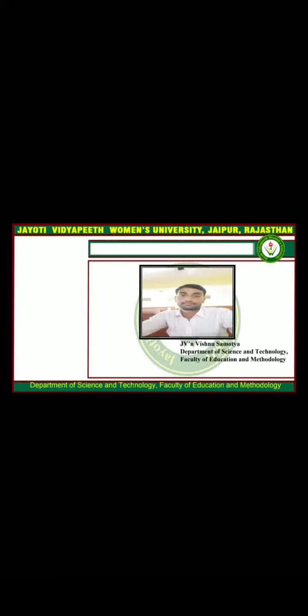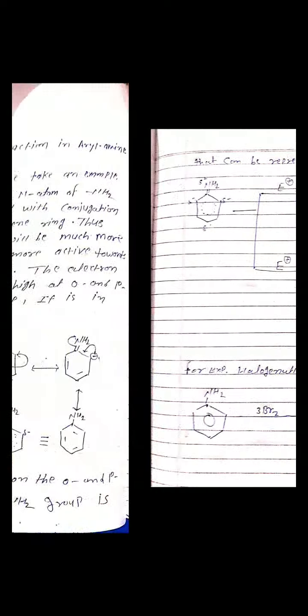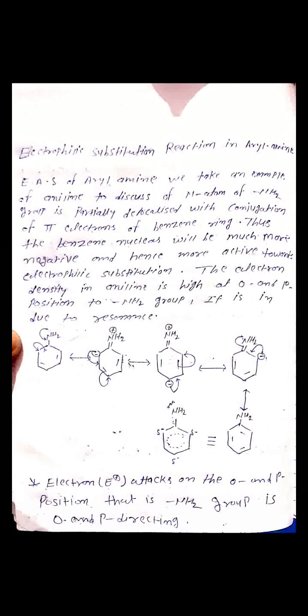The Electrophilic Substitution Reaction is represented on Benzene and Benzene substituted compounds. Now we discuss Aryl Amines. The Aryl Amine discussion includes examples of Aniline. In Aniline, the nitrogen atom of the NH2 group is partially delocalized with conjugation of the pi-electrons of the Benzene ring. Thus the Benzene nuclei will be much more negative and hence more active towards Electrophilic Substitution Reactions.